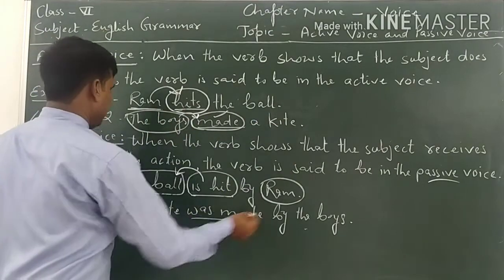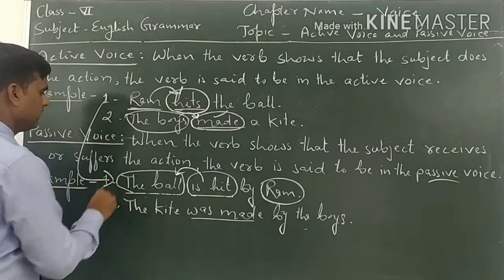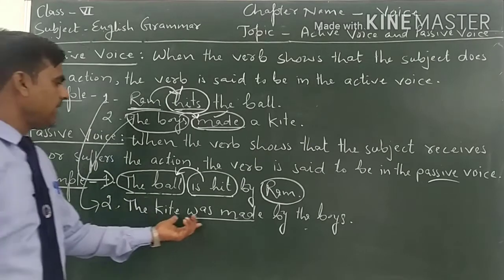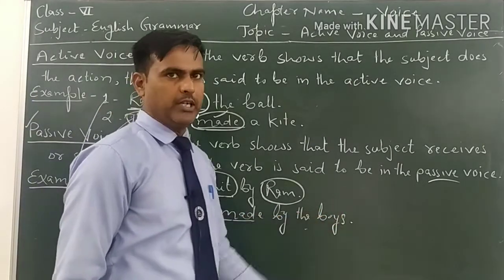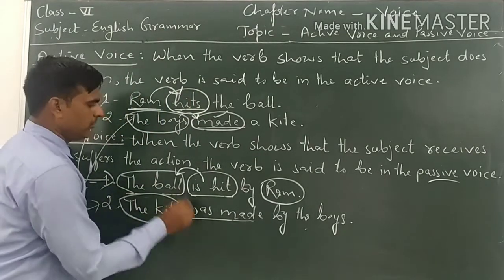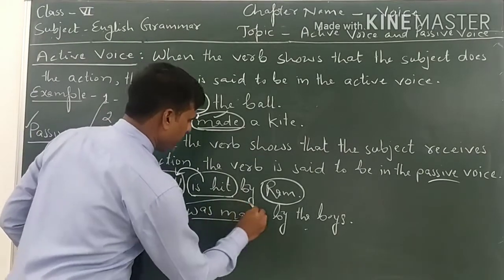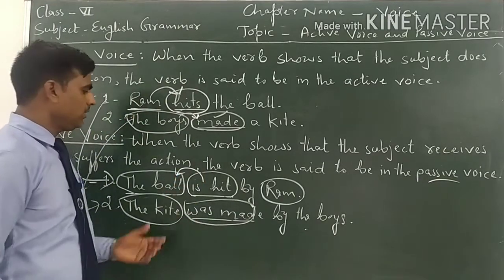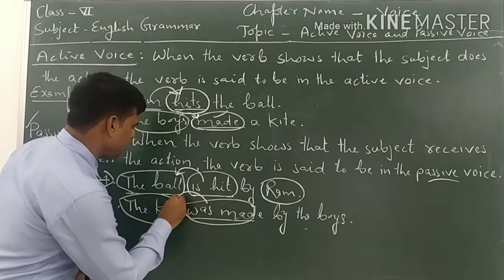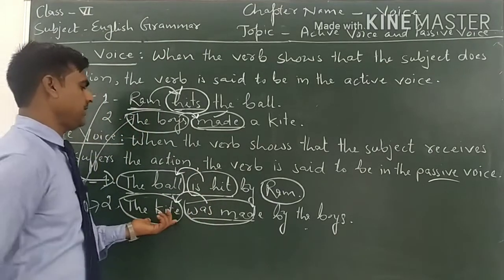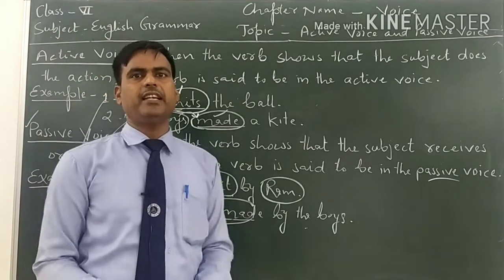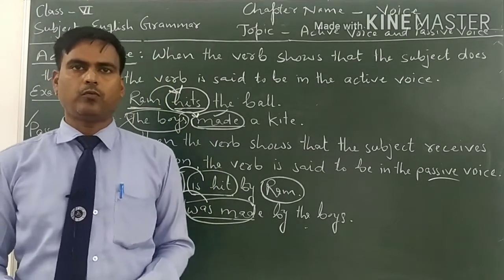This is the passive voice of the first example. Now see the passive voice of the second one: The kite was made by the boys. The kite is the subject, 'was made' is the verb. The subject receives or suffers the action — it is not doing the action. That is why it is in passive voice.